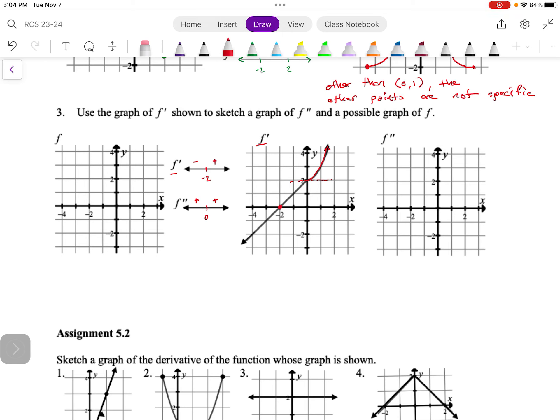For this graph initially, the concavity up until through zero is actually neither, it's actually zero. It should be a flat line, it's actually zero.